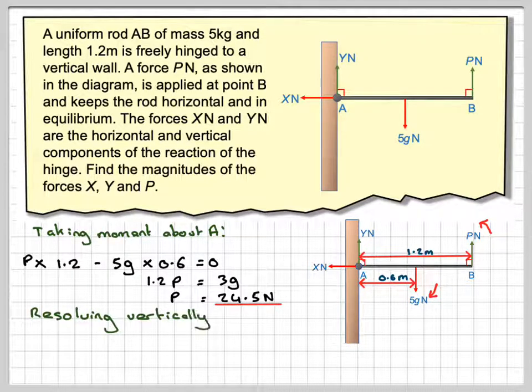Okay, resolving vertically. So vertically, we've got Y plus P or P plus Y. And going down, we've got 5G, so taking away from that. And that's equal to 0 because the rod is in equilibrium.